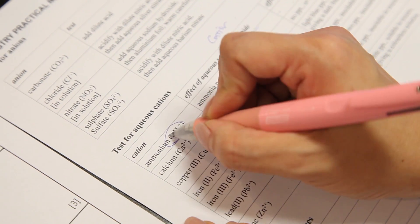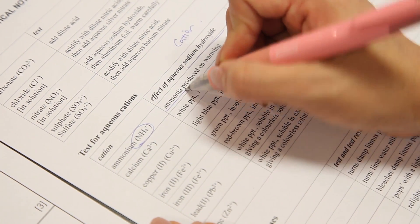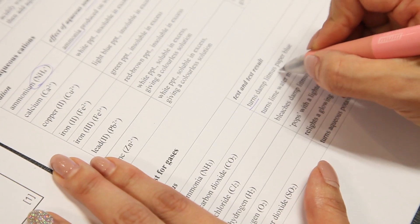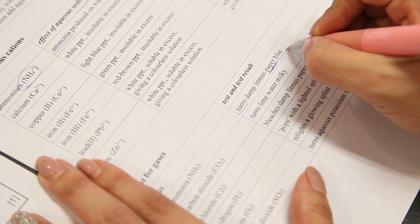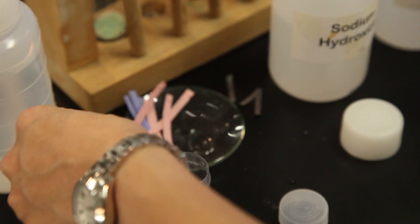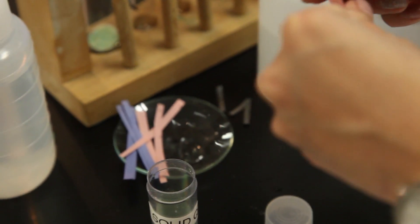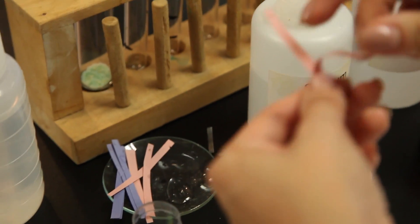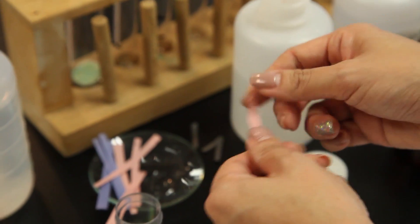This is the test for ammonium. Ammonia gas will be evolved. Ammonia gas will turn damp litmus paper blue. So I need to prepare red litmus paper. Then the red litmus paper. Let me place it over here.